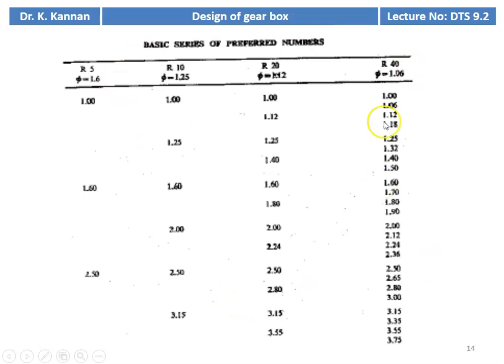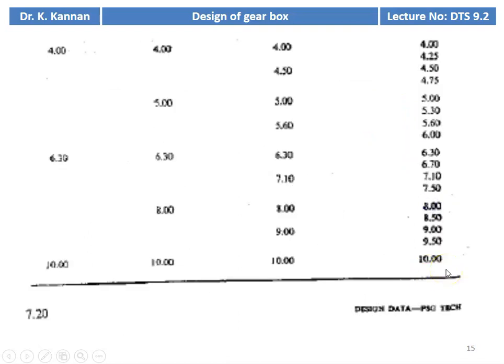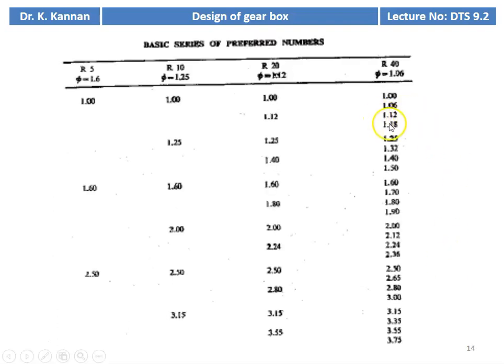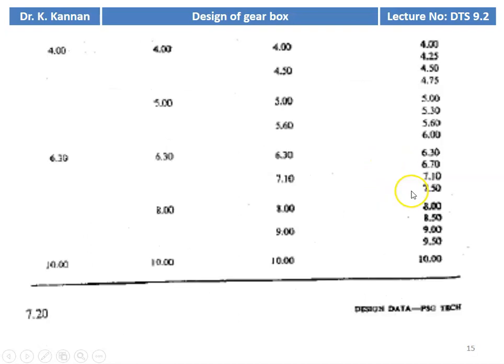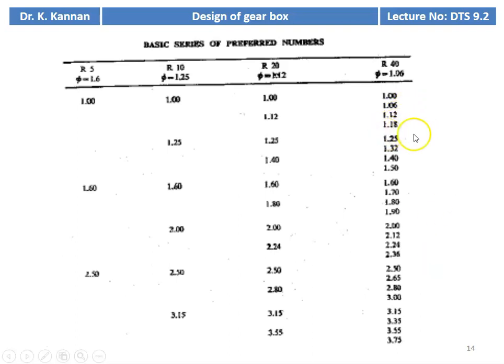This is part of the R40 series table. The series reads: 1, 1.06, 1.12, and continues to 10. If the progression ratio is higher, we read 10.6, 11.2, 11.8, 12.5, 13.2, 14.0, 15.0, 16.0, and so on, finally reaching 100 and beyond. We take the number of teeth on the gear as well as the progression ratio from the R40 series for gearbox design. The detailed use of the R40 numbers will be discussed when solving problems.